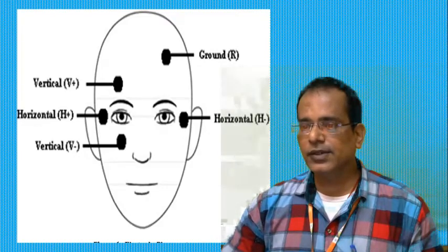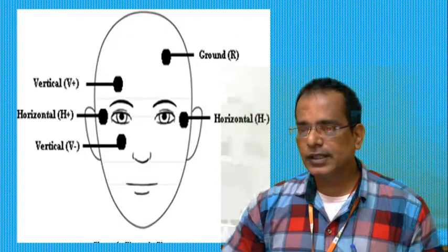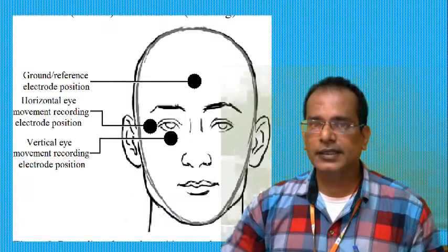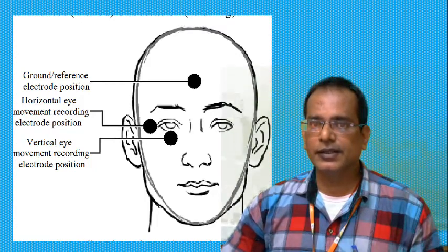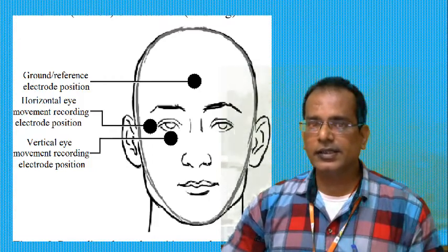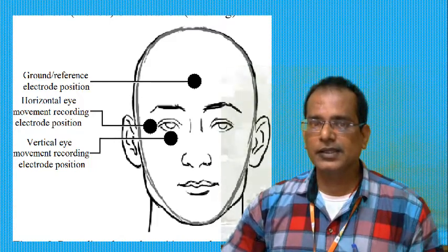The EOG picks up the inherent voltage of the eye during open-eyed wakefulness. Sharp deflections in the EOG tracing may indicate the presence of eye blinks. The forehead electrode serves as the ground reference. The horizontal electrode pair H+/H− records horizontal eye movement, and the vertical electrode pair V+/V− records vertical eye movement.